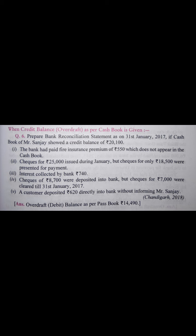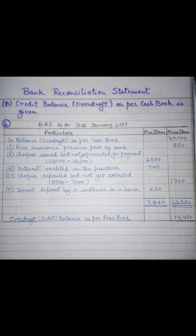The first entry is the bank had paid life insurance premium of 550 rupees, which does not appear in the cash book. Since this amount has been paid by the bank, we have to deduct this amount in our BRS. I have prepared a BRS — the format is similar to the first case, with columns for particulars, plus items, and minus items. The credit balance or overdraft of 20,100 is written in the minus column, and 550 rupees is also written in the minus item column.